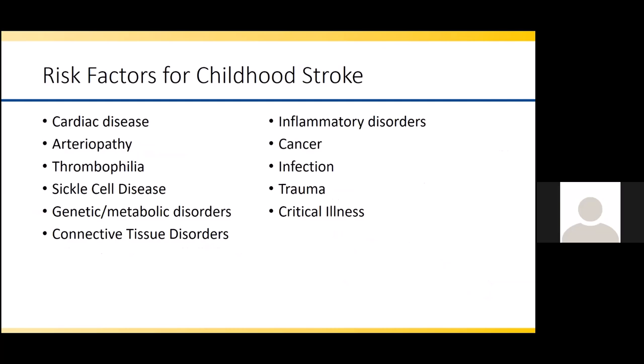The risk factors for childhood stroke are much more variable. Cardiac disease is one of the more common risk factors, present in about a third of children with childhood stroke. Arteriopathy — a problem intrinsic to the blood vessels of the head or neck — is the other big risk factor. Many other risk factors are considered when evaluating a child with stroke, including thrombophilias, sickle cell disease, genetic or metabolic disorders, connective tissue disorders, inflammatory issues, cancer, infection, trauma, and critical illness.